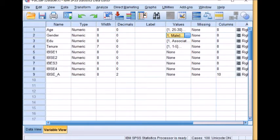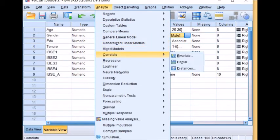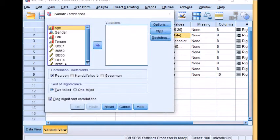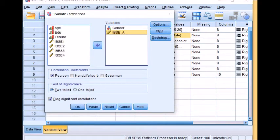What I will do? I will go to analyze correlation bivariate. I will enter the variables gender and IBSC into the variables box. I will click Pearson product moment correlation and test of significance should be two-tailed. And I will select flag significant correlations. Then just I will press OK.